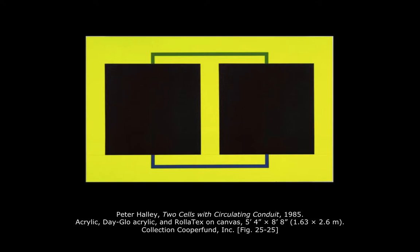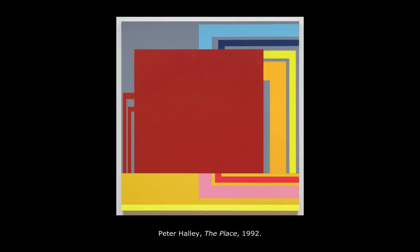Halley thought of the square as, quote, a sign for certain kinds of regimented confining structures in the social landscape. It's hard to tell from these slides, but Halley often incorporated interesting materials and textures into his paintings. He used day-glow paints, stucco surfaces, and neon-colored wallpapers inside a gallery setting to offset his paintings.